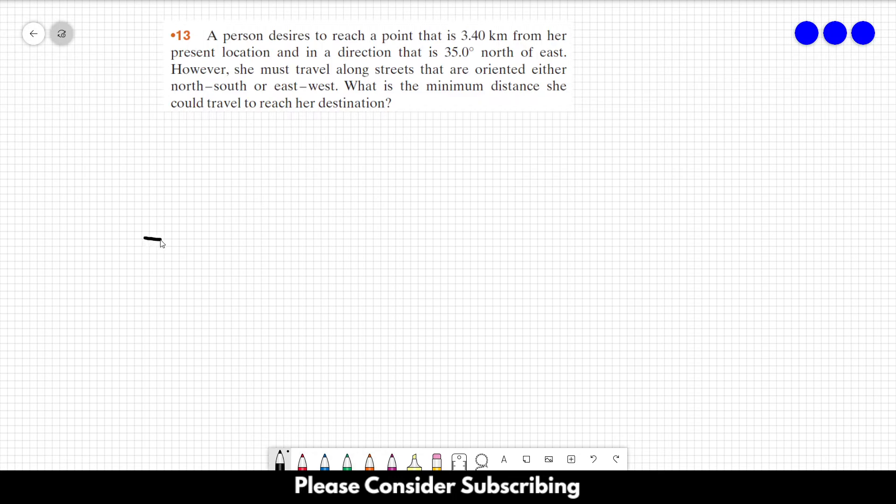So, let's suppose that we have our X and Y plane here. Number 13 says that there is a person over here which wants to reach a point that is 35 degrees north of east. So, something like this, 35 degrees.